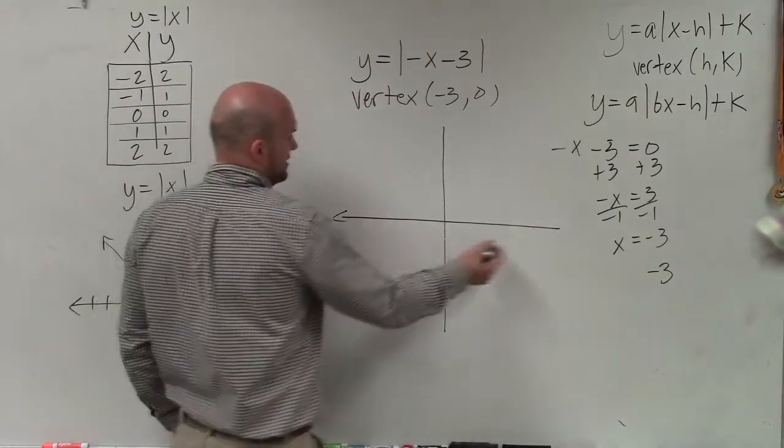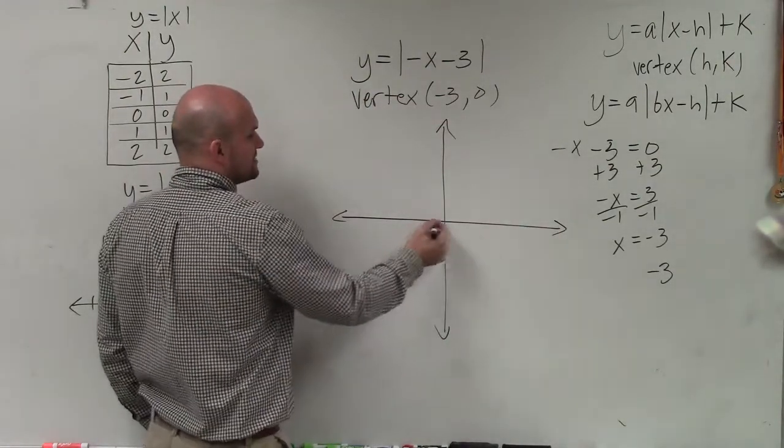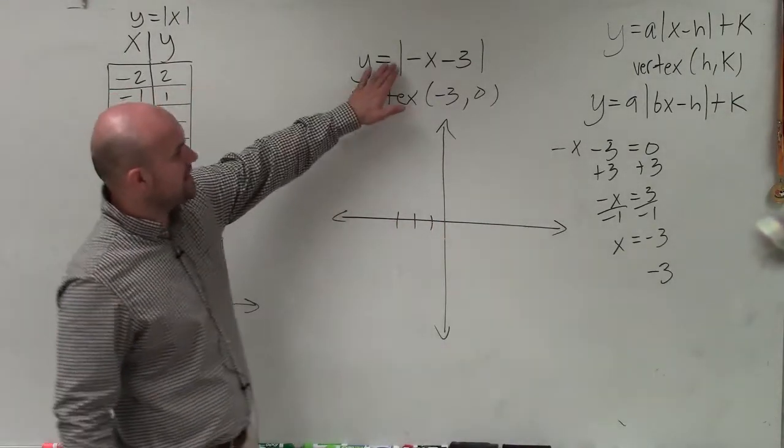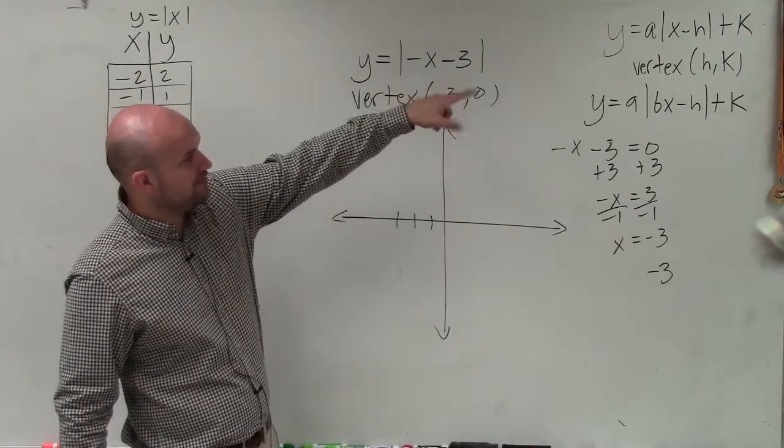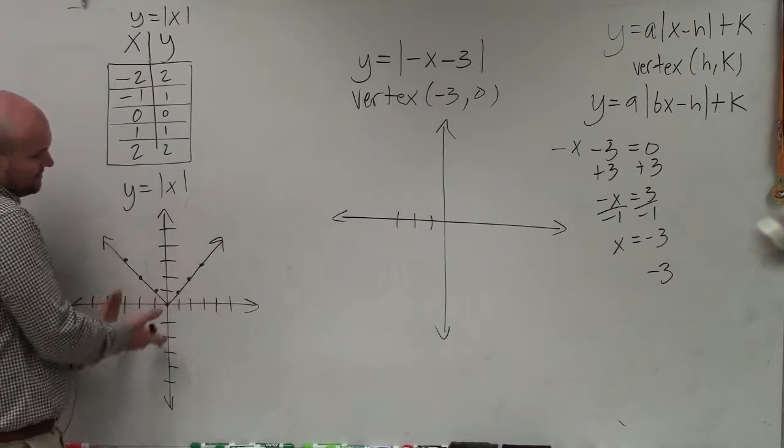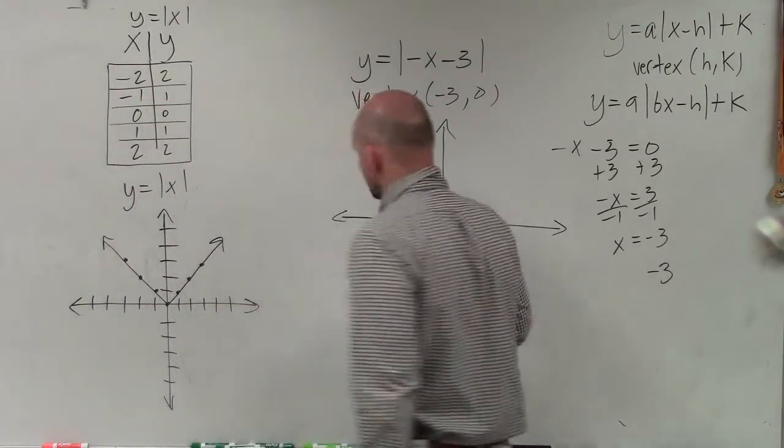So therefore, ladies and gentlemen, this graph is now, instead of shifting to the right, it's shifting 3 to the left. Now, I'm not multiplying by a or using a value for a or for b. So therefore, the graph is going to have the exact same characteristics as the parent graph, meaning at negative 3, 0, which is my vertex.